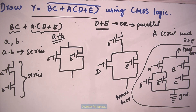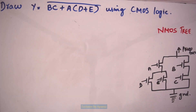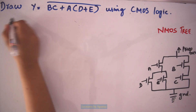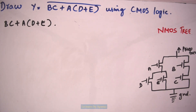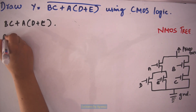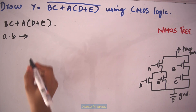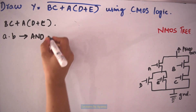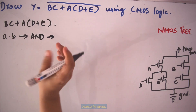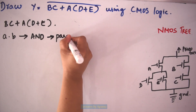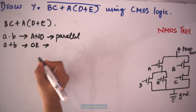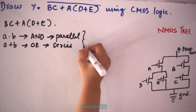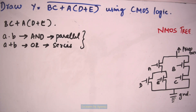Now let's draw the PMOS tree. To draw the PMOS tree, I am again considering the function BC plus A into (D plus E). For PMOS, everything will be the dual of NMOS: if A dot B is an AND operation, the transistors with inputs A and B will be in parallel. And if it is A plus B, an OR operation, then the transistors will be in series — the opposite of the NMOS tree.